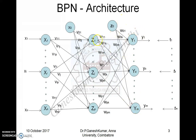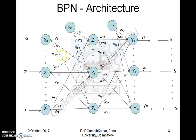From Z1, connections go to Y1, YK, and YM. Similarly, from ZJ, connections also go to Y1, YK, and YM. If you look at the architecture closely, you can find notations over the connections, and these notations represent the weights.